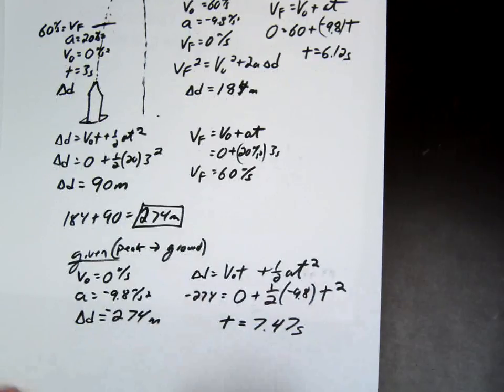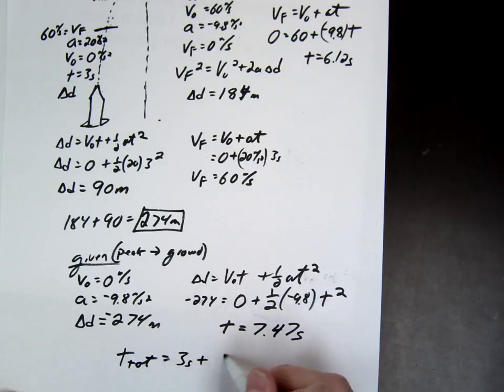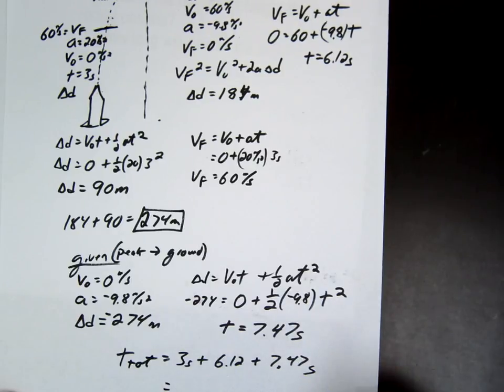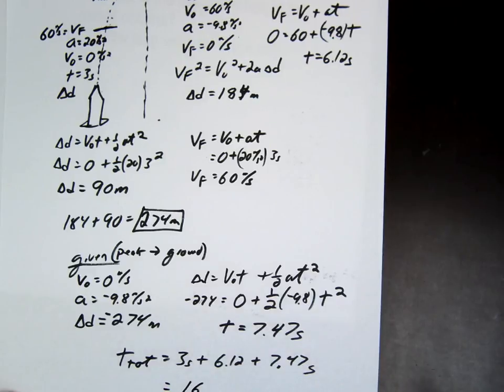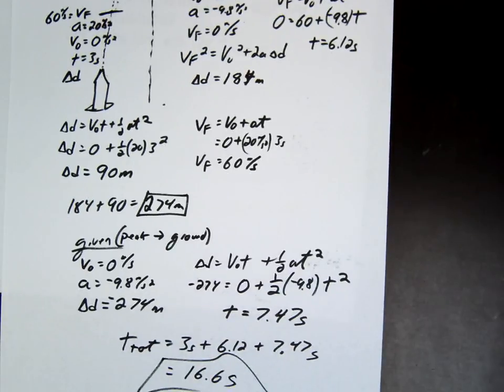Last but not least, how do we find T total? Add them all up. So three seconds for the first part, six for the second part, seven for the third part. And it's 16. So we'll just go to three digits. 16.6 seconds is our total time.